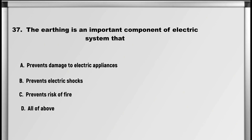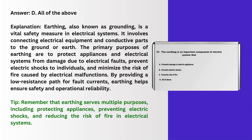Let's move on to question number 37: Earthing is an important component of the electric system that: A. Prevents damage to electric appliances, B. Prevents electric shocks, C. Prevents risk of fire, D. All of the above. Answer: D. All of the above.